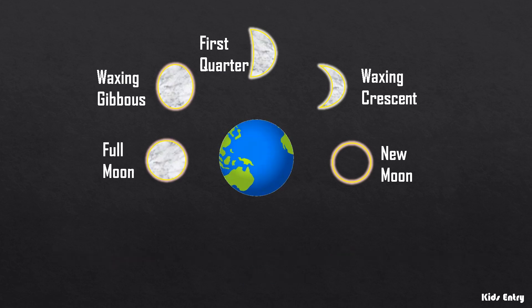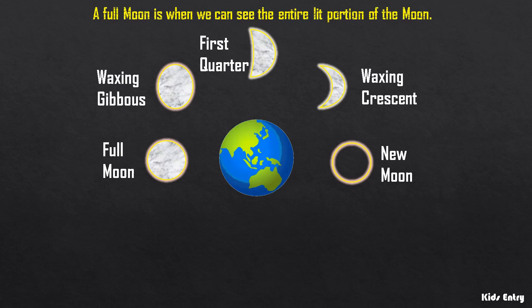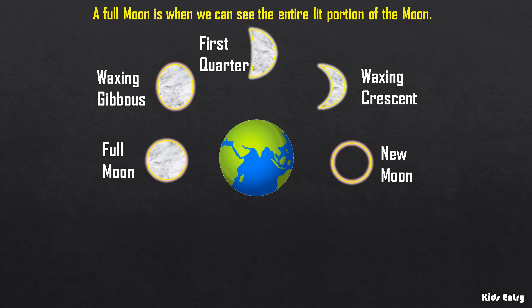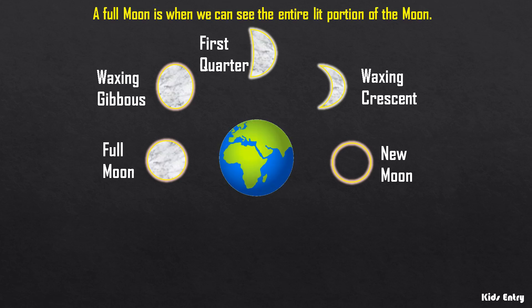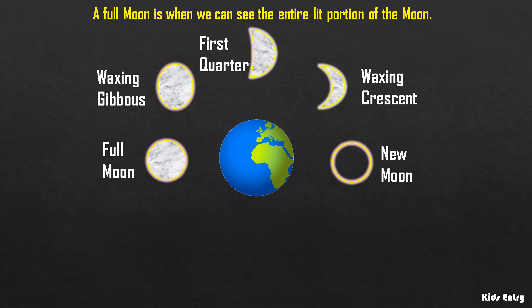Full moon. A full moon is when we can see the entire lit portion of the moon.